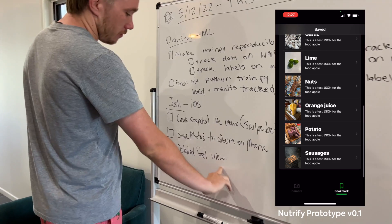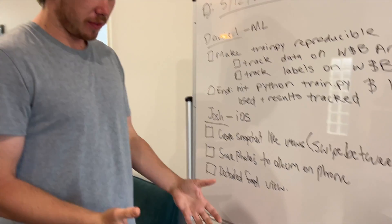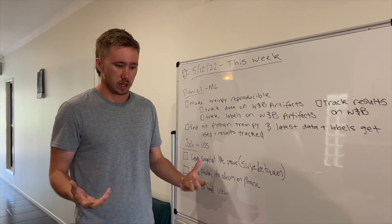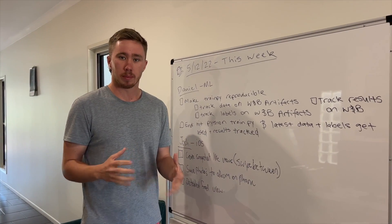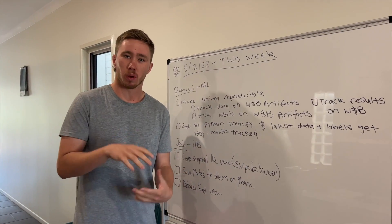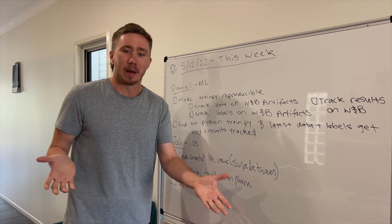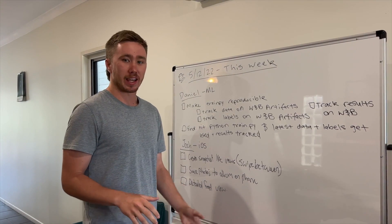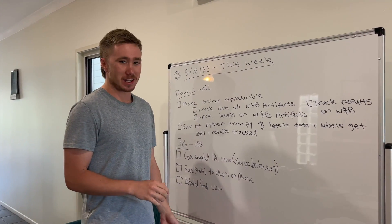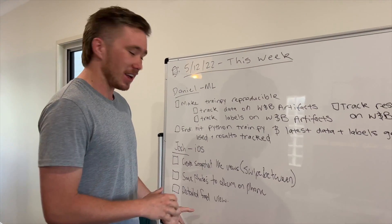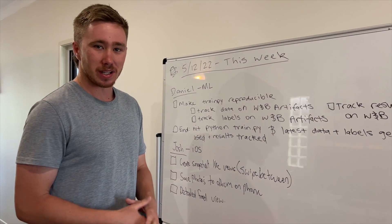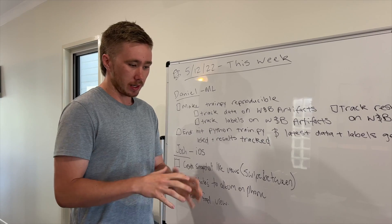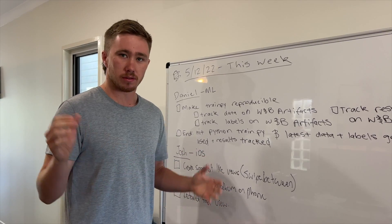Detailed food view. So when you take a photo of a food, start working on being able to tell people more about the food. At the moment it's kind of like a skeleton — it's working, it needs a bit of work, but it looks pretty good already. Basically it's front-end work this week.